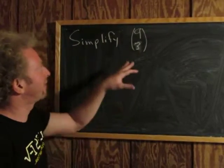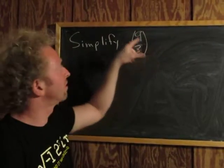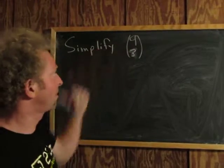In this video we're going to simplify combinations. 9 choose 3. There's a formula for this.